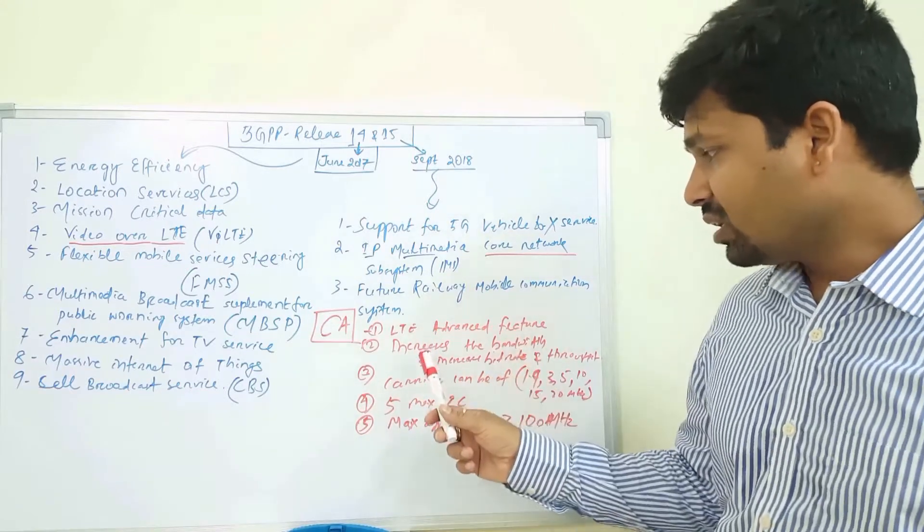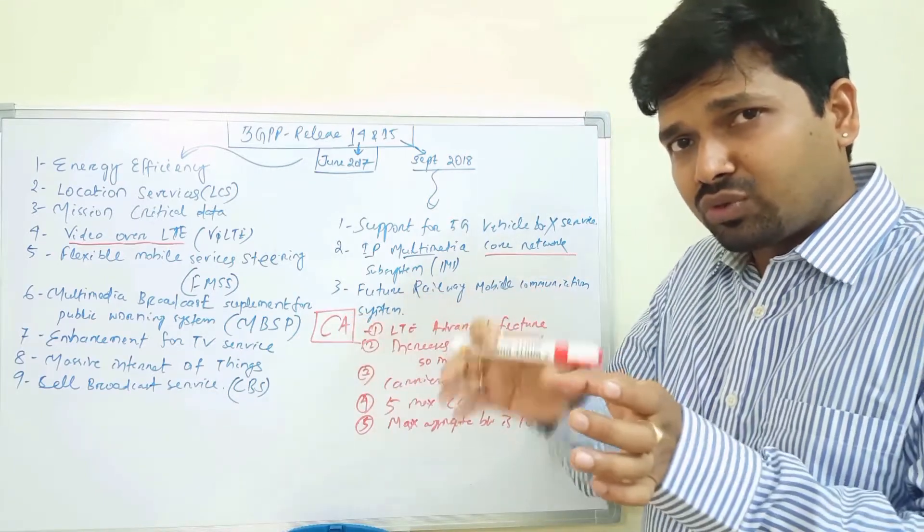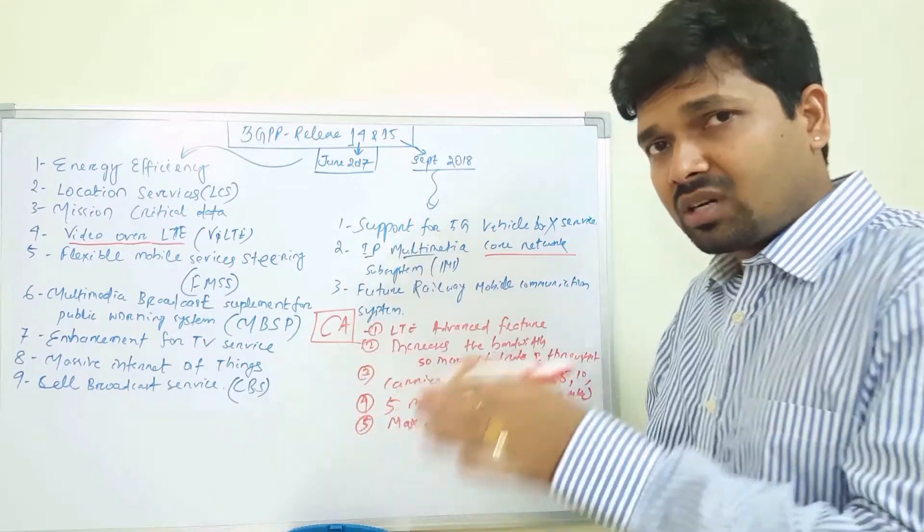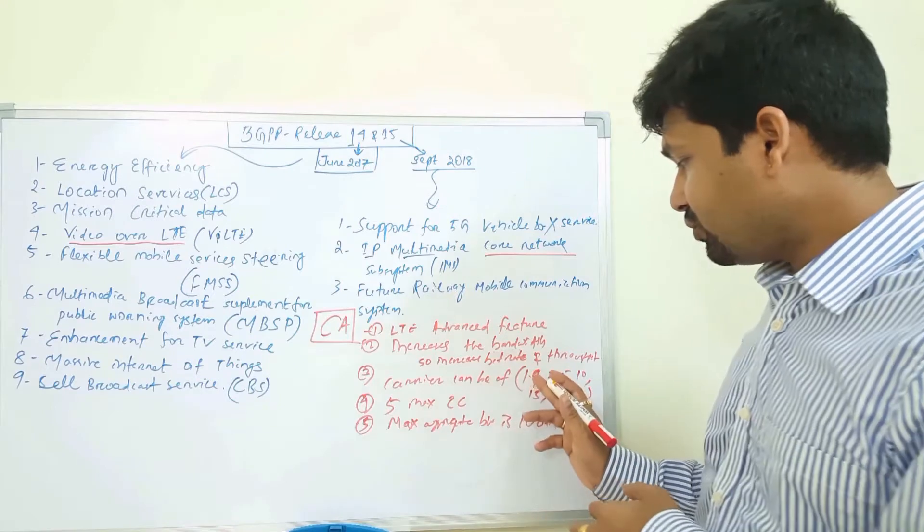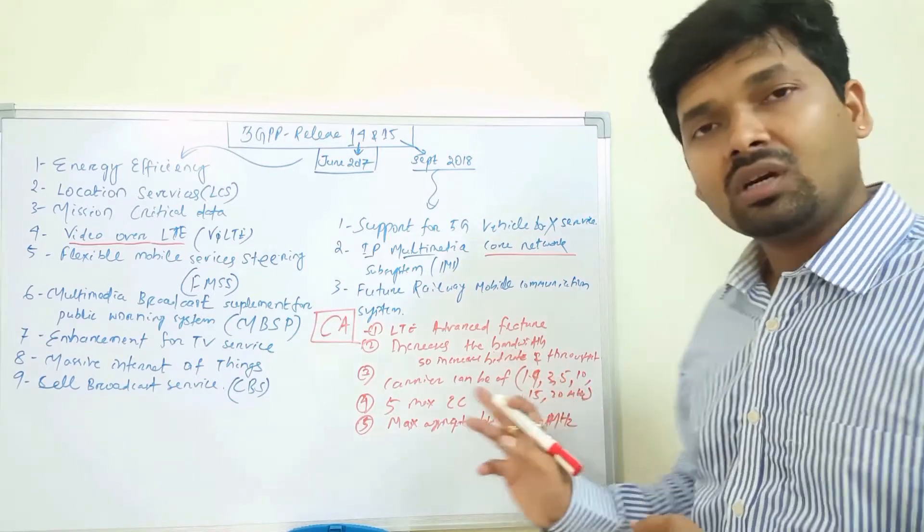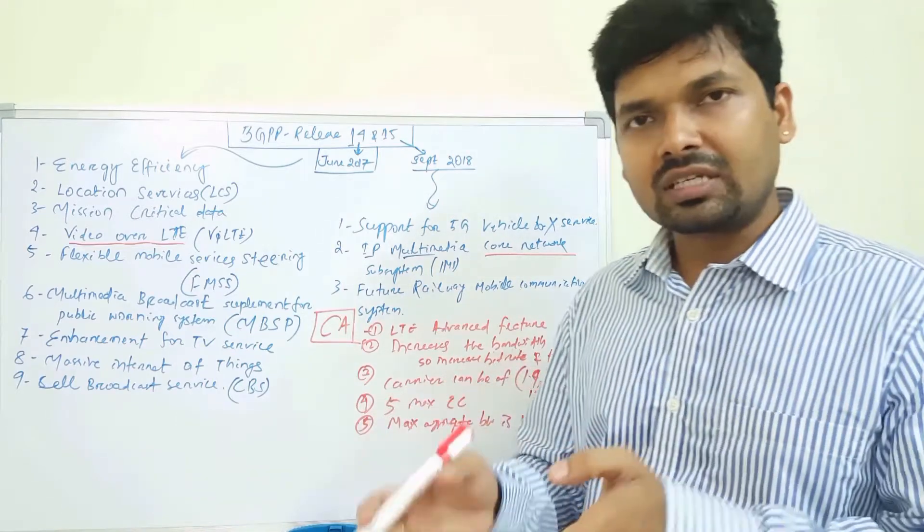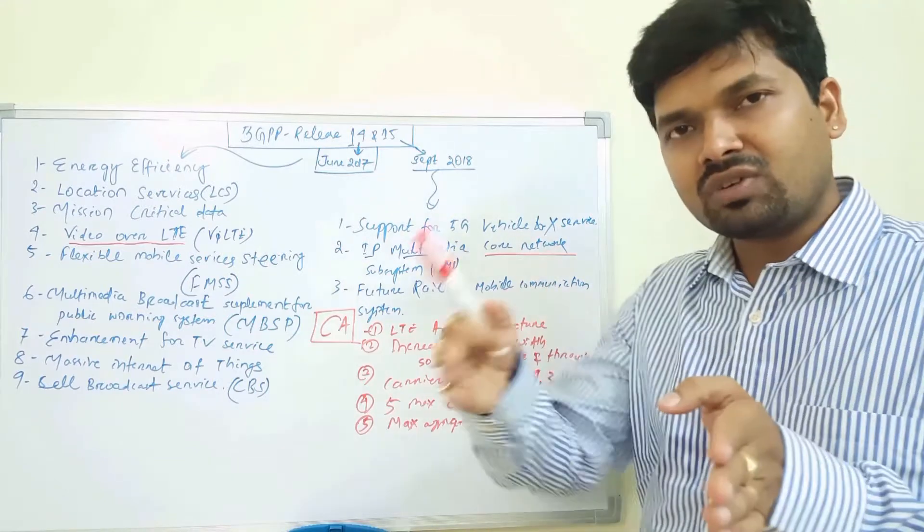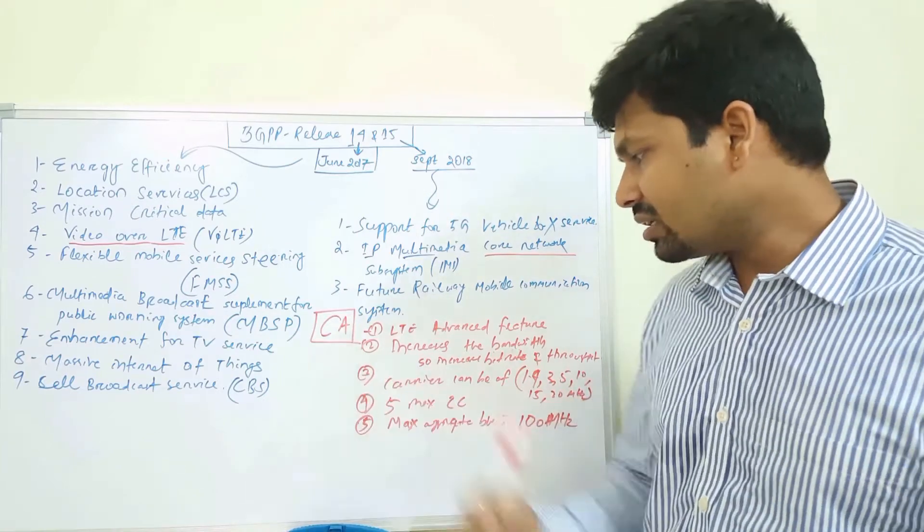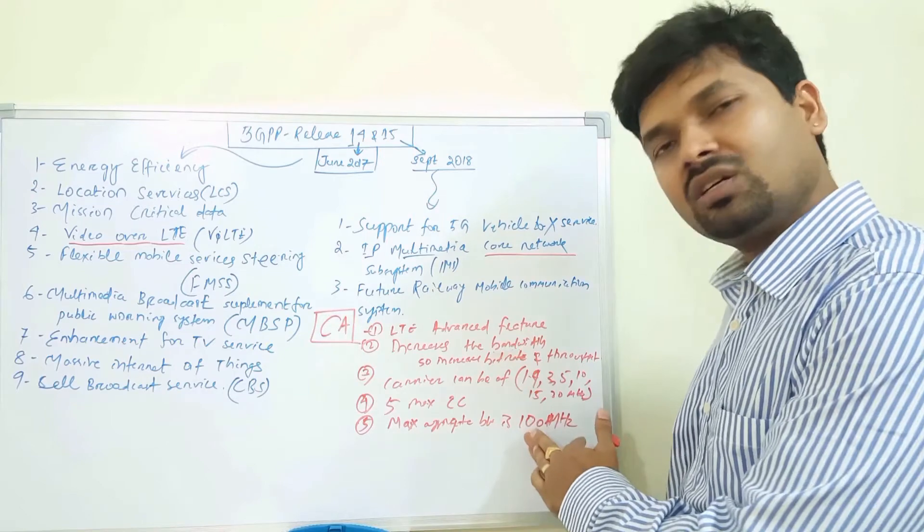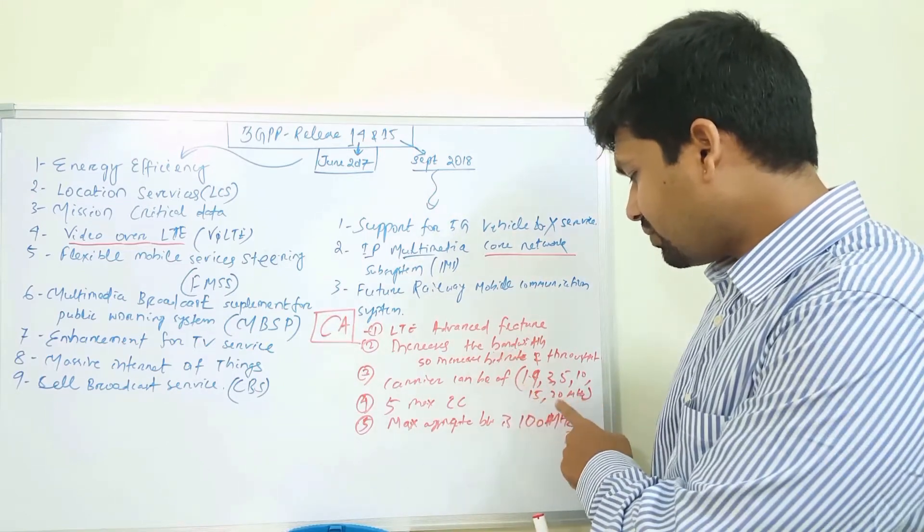We combine two, three carriers: 1.4 megahertz, 3, 5, 10, 15, up to 20 megahertz. Carriers can be like 1.4 megahertz, 3, 5, 10, 15, up to 20 megahertz. Maximum 5 CC can be added - five carrier components can be added. So you can go for 20, 25 megahertz or any one of these combinations can be used in carrier aggregation. The max aggregate bit rate could be 100 megahertz.